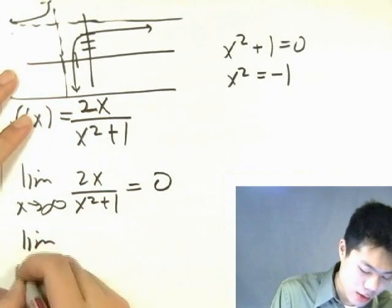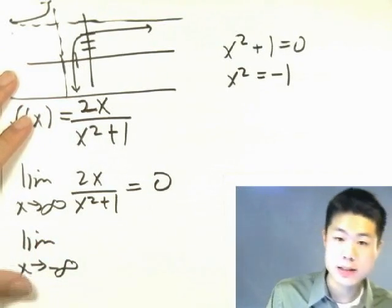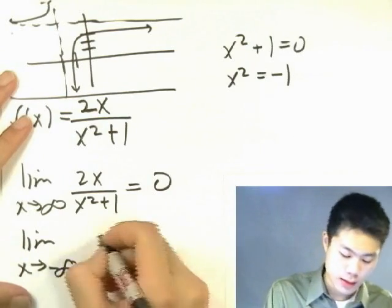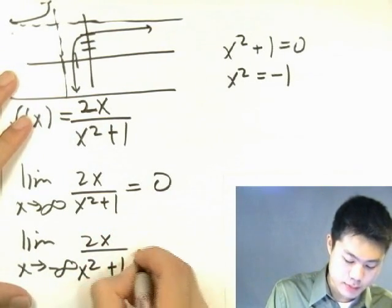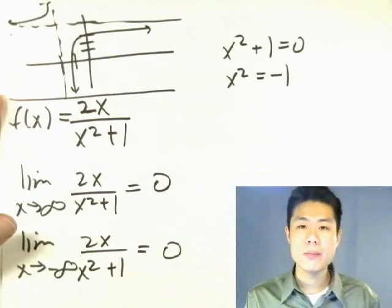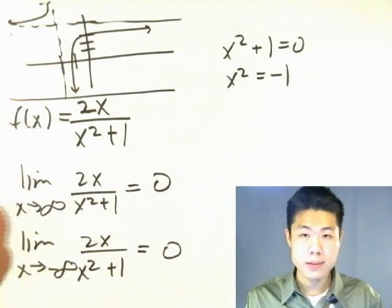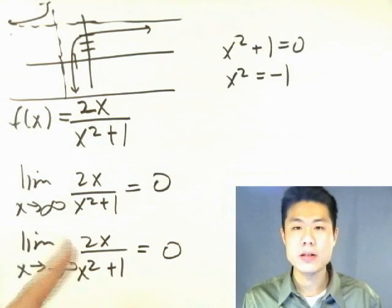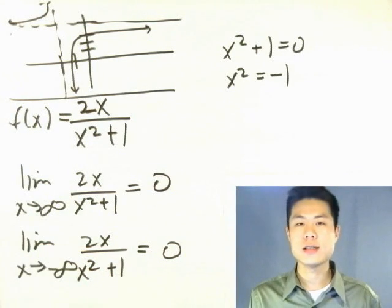What about the other case as x approaches negative infinity? It's still going to be 0. The question is whether we're going to approach 0 from the left side or from the right side of the number line.